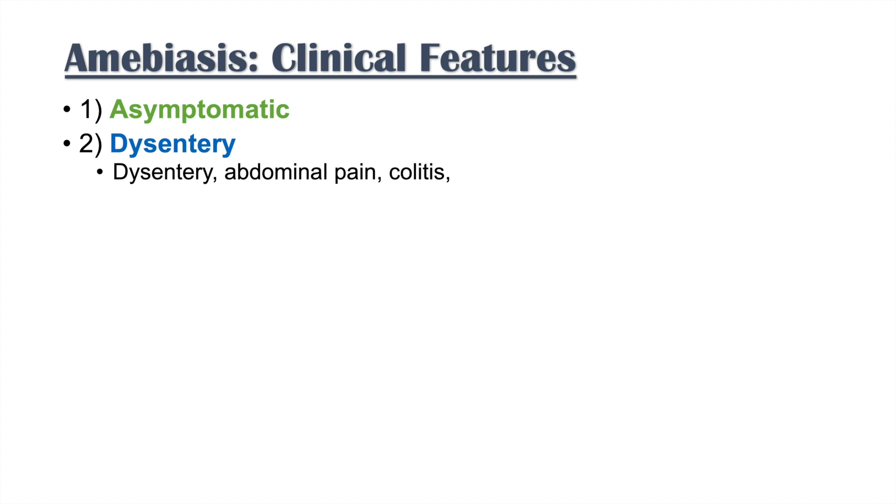What are some of the clinical features of intestinal amoebiasis? First, you can actually have an asymptomatic picture. If you have a very good immune system and are exposed to these amoebae, you might not have any symptoms if you're able to clear the infection. The second presentation is amoebic dysentery, which involves abdominal pain and colitis. Patients can get bloody diarrhea due to the local tissue damage and destruction we discussed.